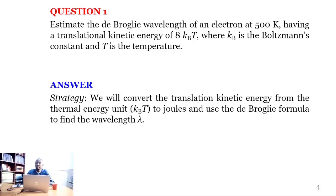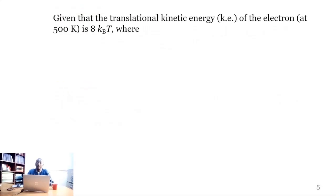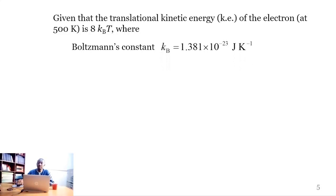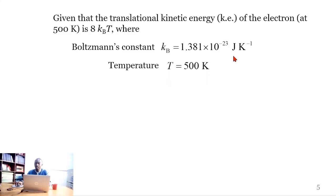And then use the de Broglie formula to find the wavelength of the electron. From the question, the translational kinetic energy of the electron is 8k_B T at 500 Kelvin. The Boltzmann constant has the value 1.381 × 10⁻²³ J/K, and the temperature is 500 Kelvin.